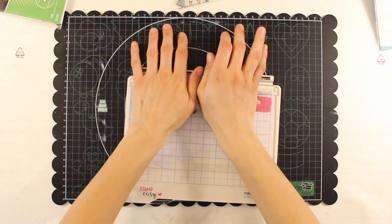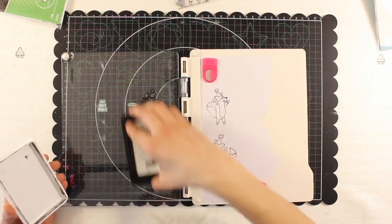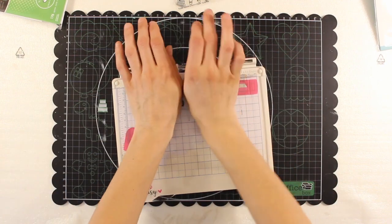This time I'm going to stamp with black ink. I'm stamping a couple of times to have a crisp image.